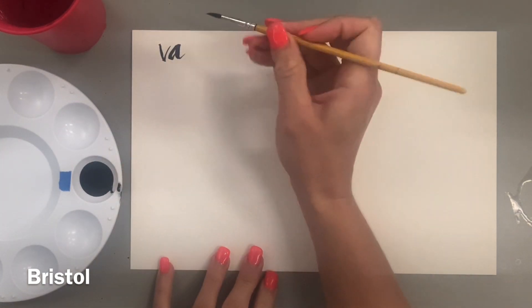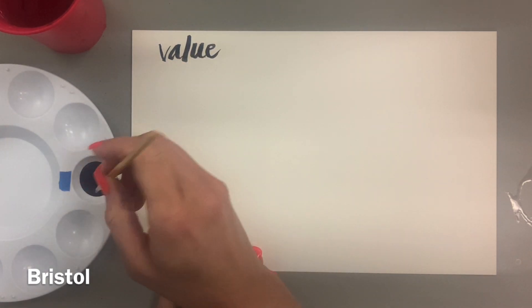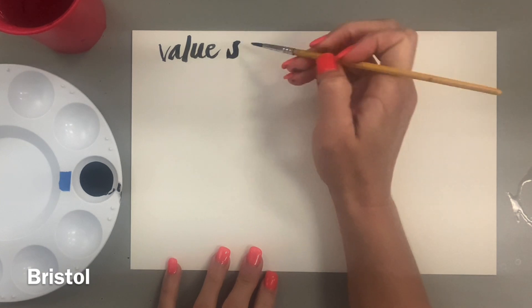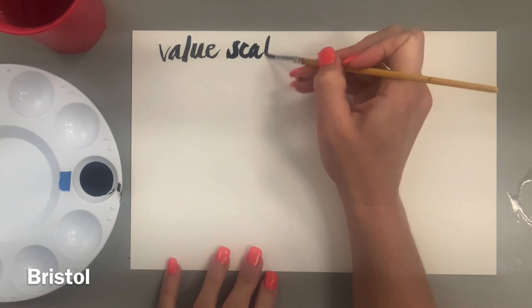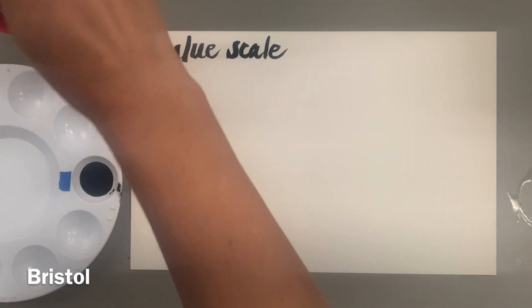I am using smooth Bristol board to create my value scale because I love the white and I also like that it's really smooth. You can definitely practice doing this in your sketchbook, but I like to do it on the same type of paper I'll be using, so I cut small pieces for my students to practice on the paper they'll be using for their final product.